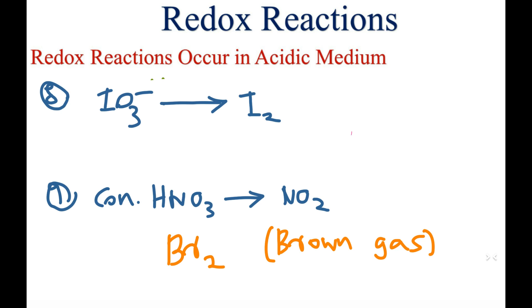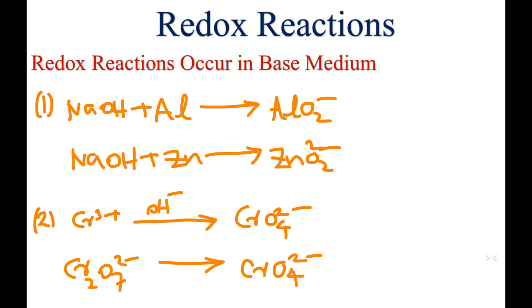I₂ gas takes purple color. Now considering redox reactions in basic medium: with sodium hydroxide, aluminium becomes AlO₂⁻ (aluminate ion). Also, sodium hydroxide reacts with zinc and zinc becomes zincate, whose structure is ZnO₂²⁻.